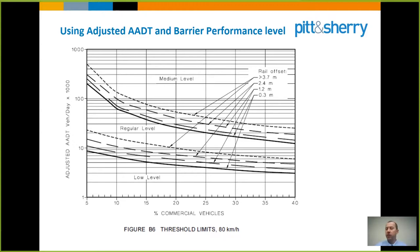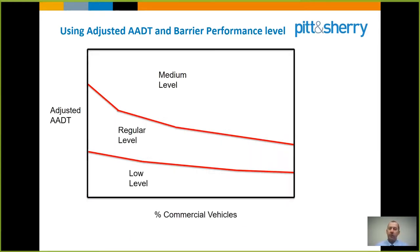The offset lines reflect the fact that greater offset from the running lane to the barrier means it's inherently safer — you're less likely to hit the barrier in the first place. If we focus on a 0.3 metre offset, the other lines become irrelevant and we end up with three distinct zones on the graph: an area where a low performance level barrier is acceptable, an area where regular is needed, and an area where medium is required — depending on where the adjusted AADT and commercial vehicle percentage sit.